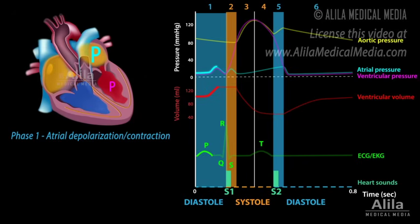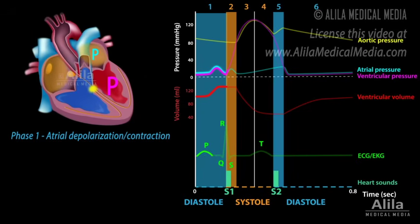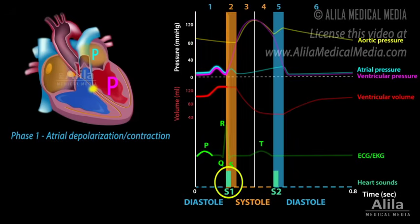As atrial contraction completes, atrial pressure begins to fall, reversing the pressure gradient across the AV valves, causing them to close. The closing of the AV valves produces the first heart sound, S1, and marks the beginning of systole.